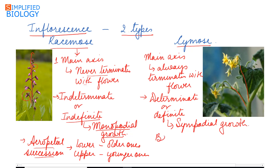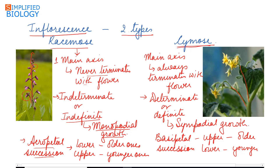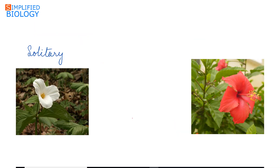In cymose inflorescence, flowers develop in basipetal succession, meaning the upper flowers are the older ones and the lower flowers are the younger ones. The growth is determinate or definite, referred to as sympodial growth. Besides racemose and cymose, there are certain special types of inflorescence which will be studied later.